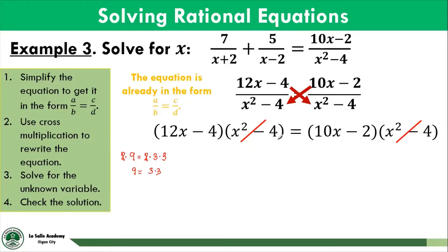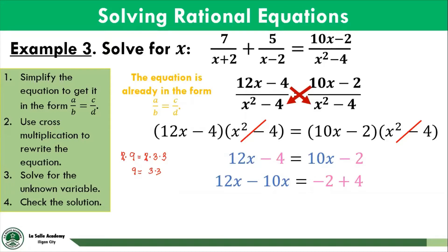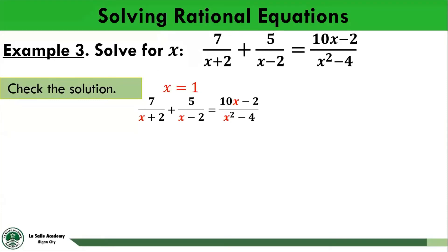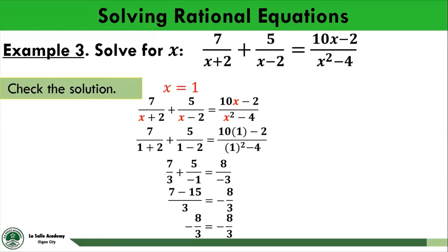The remaining equation is 12x minus 4 equals 10x minus 2. Combining like terms using transposition: 12x minus 10x equals negative 2 plus 4, giving 2x equals 2. Dividing both sides by 2, x equals 1. Checking by substituting x equals 1 into the original equation gives negative 8 over 3 on both sides, so we accept x equals 1 as the solution to the rational equation 7 over x plus 2, plus 5 over x minus 2, equals 10x minus 2 over x squared minus 4.